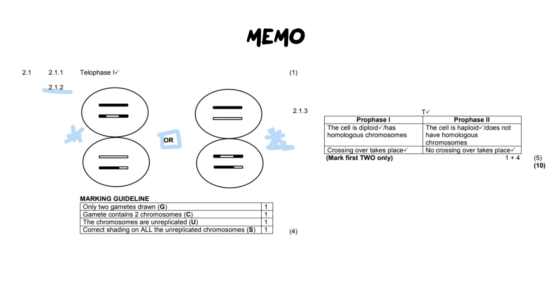Now if you look at the marking guideline you can see that you get a mark for only two gametes, that your gametes contain only two chromosomes. They must be unreplicated. In other words they're not attached anymore and that there is correct shading, and that's what gets you the four out of four.